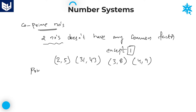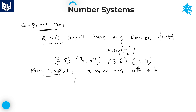The last definition in this session is prime triplet. Triplet means three, so prime triplet means three prime numbers with a difference of 2 between each. Those three prime numbers are called a prime triplet. For example, (3, 5, 7) — these three form one prime triplet.